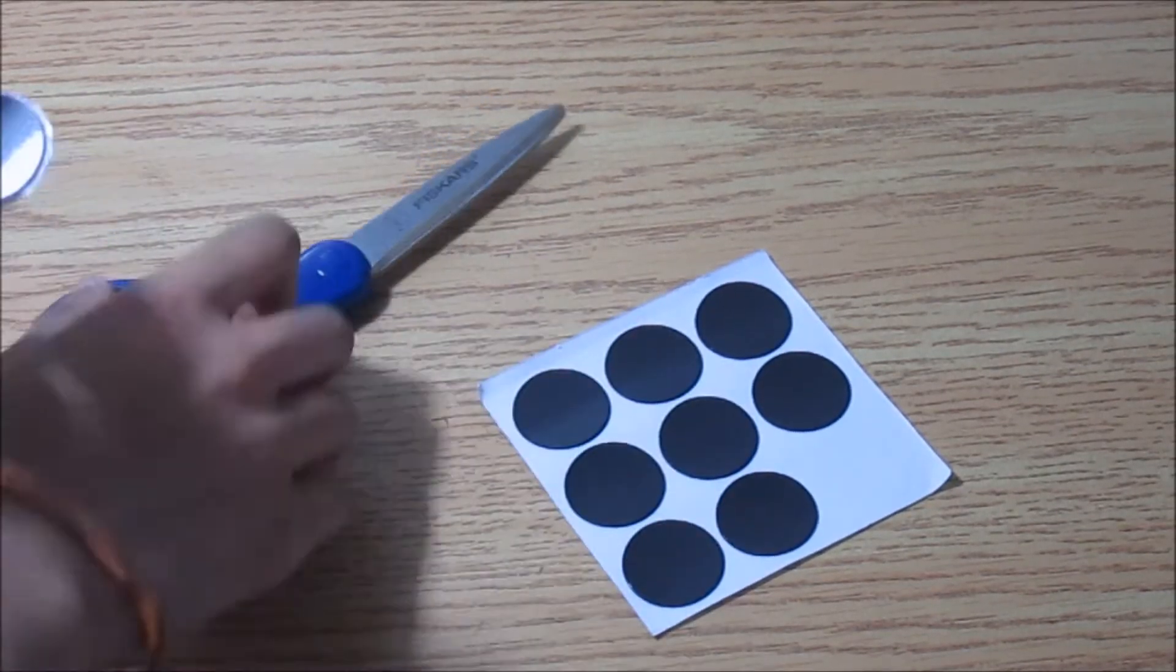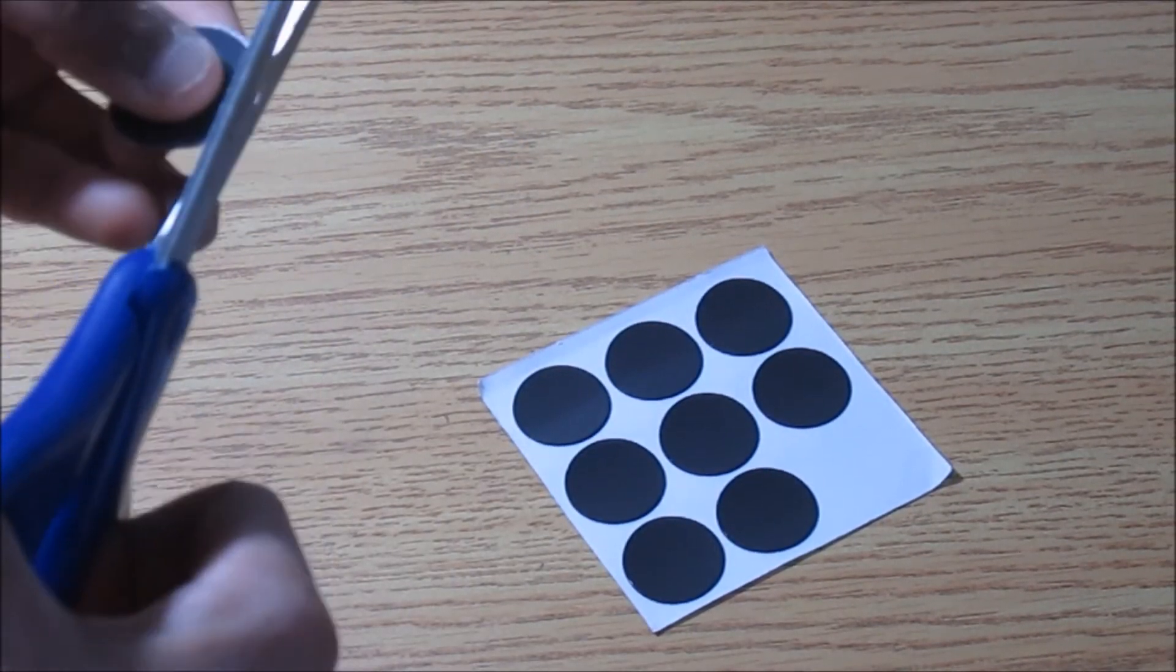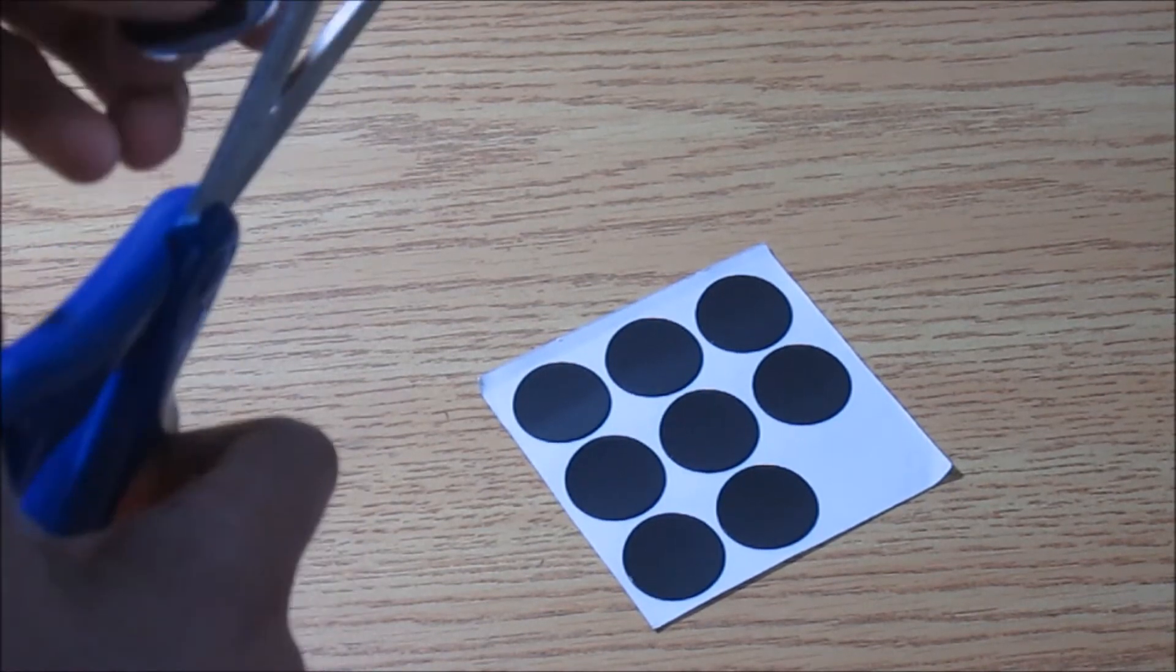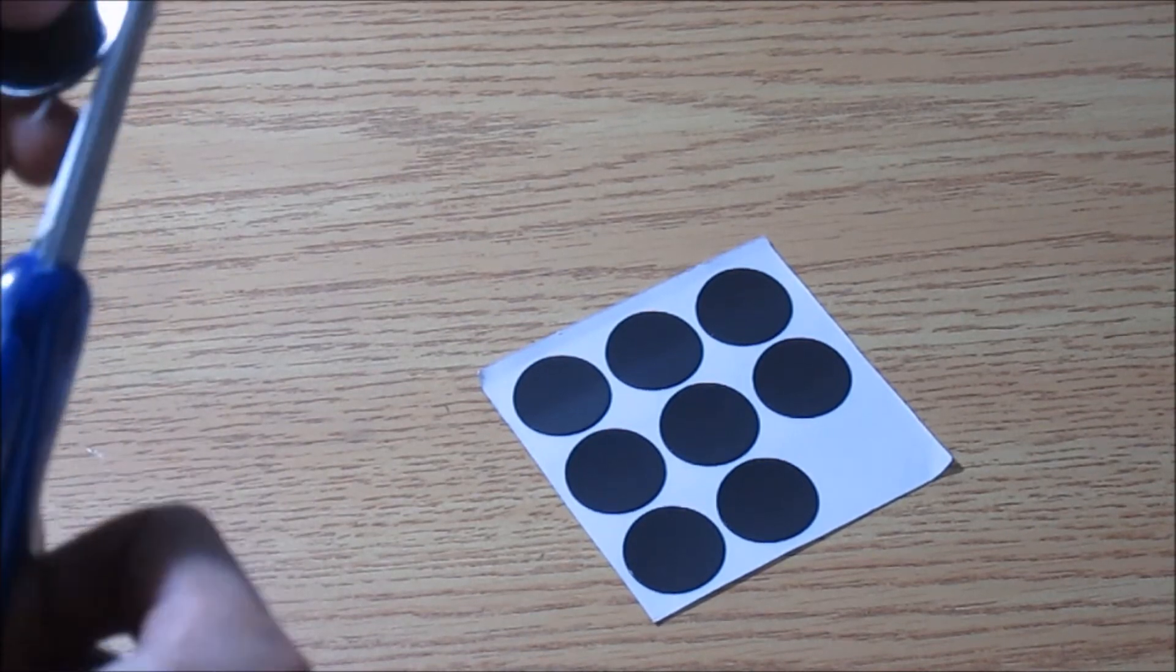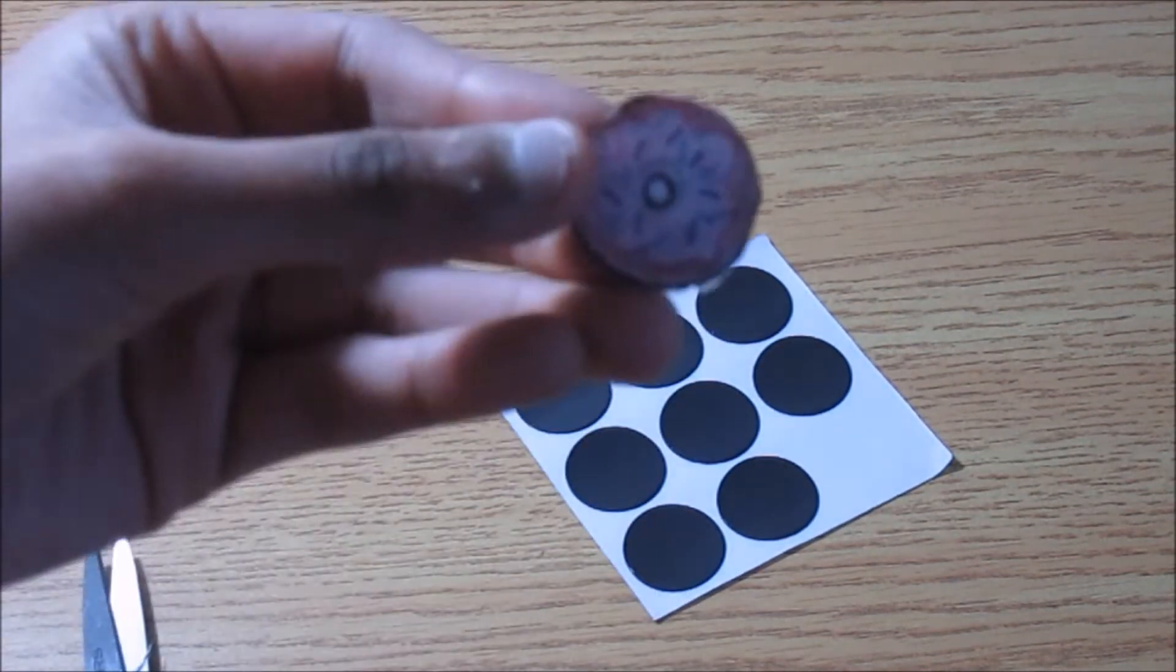Alright guys, so the last step is take out your piece of magnet and put it onto the back of your drawing, or whatever you guys did. And yeah, that's pretty much it, and this is how it looks like when it's done.